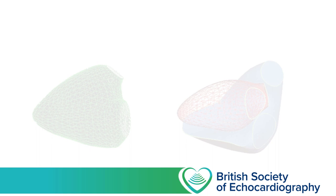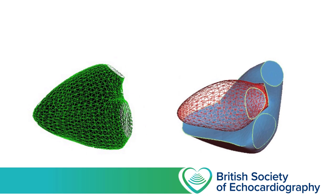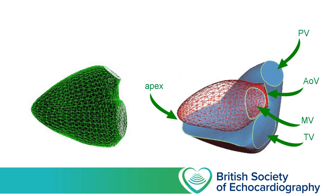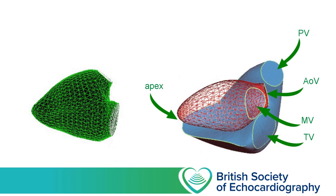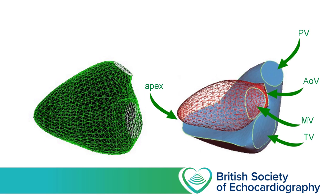Now let's move on to the right ventricle. The RV is often described as having complex geometry. In a simulated model, the right ventricle appears as the blue structure while the red mesh grid is the left ventricle. The tricuspid valve is medially and inferiorly positioned, whilst the pulmonary valve is the most superior and anterior of the four valves. The right ventricle wraps around the left ventricle, and the two-dimensional views obtained in ultrasound are inadequate in accurately demonstrating this 3D structure. Let's look at how our standard focused echo views image the RV and get a sense of their limitations.